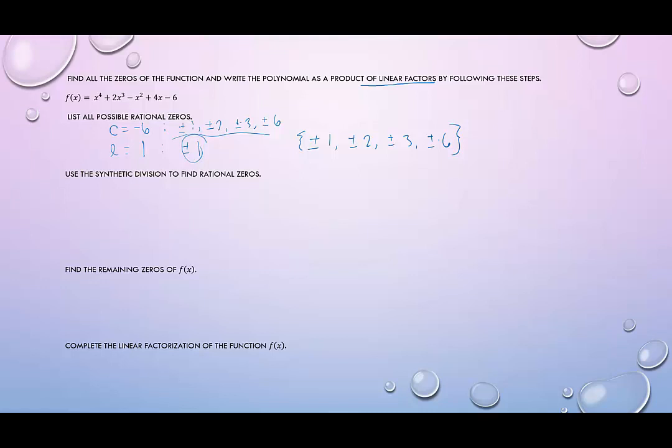Then we just eliminate that one, and we try another one. So for example, if we think -1 should be a zero of this, I'm going to try -1. Then I would write the coefficients and constant of the given function, 1, 2, -1, 4, and -6. And now I'm going to test that. So I bring down the 1, 1 times -1 is -1, 2 plus -1 is 1, 1 times -1 is -1,